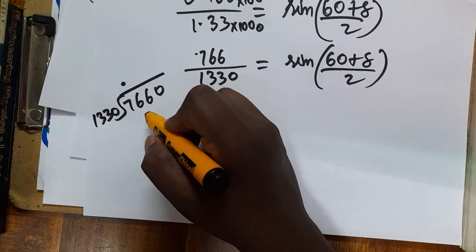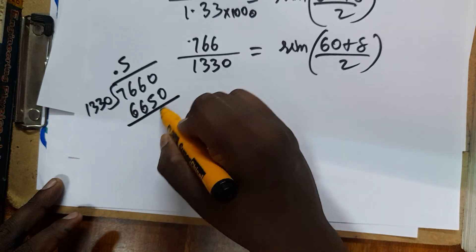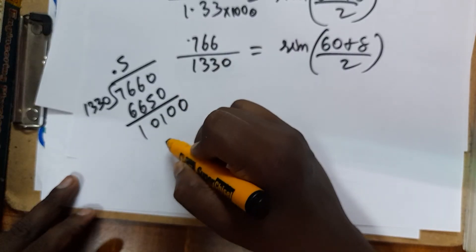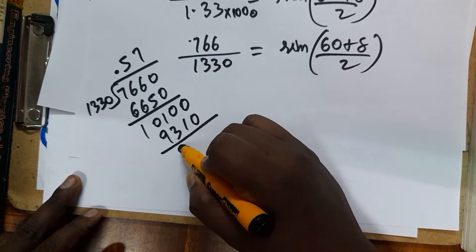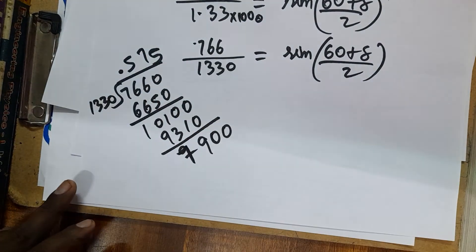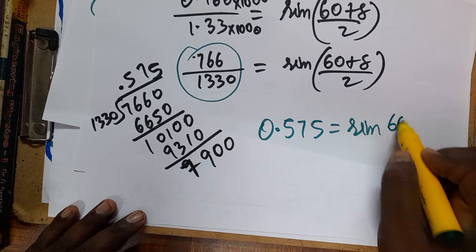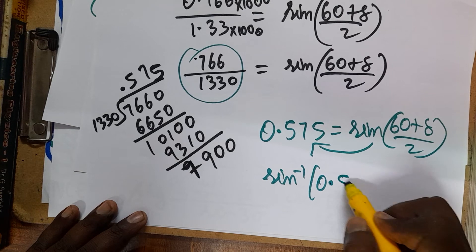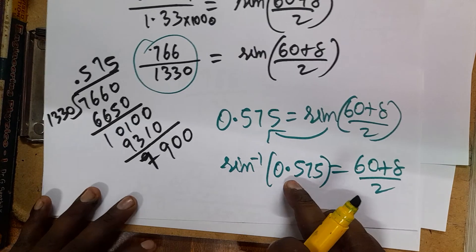Performing the long division of 766 by 1330: we get approximately 0.575. Therefore: sin((60 + δ_min)/2) = 0.575. Taking sine inverse on both sides: (60 + δ_min)/2 = sin⁻¹(0.575). We now need to find sin⁻¹(0.575) using the sine log table.